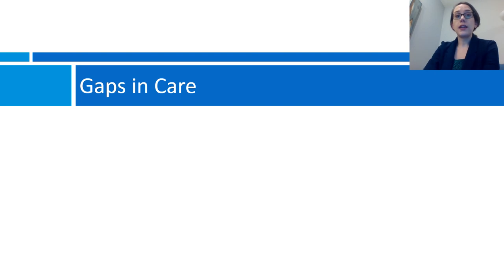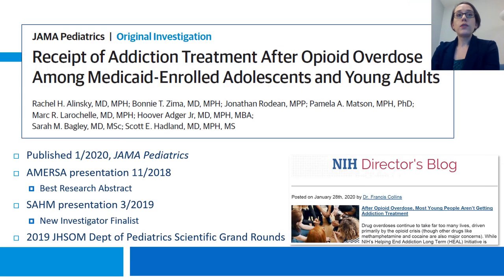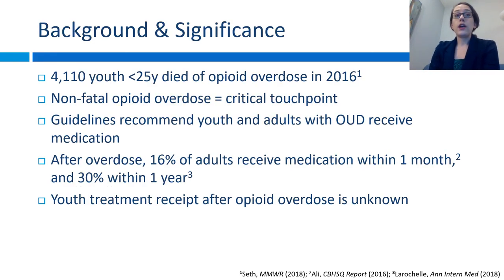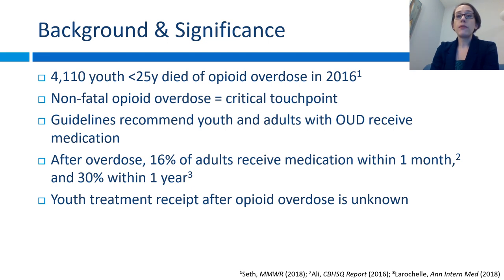Let me talk about gaps in care and some of the research I've done. I'll walk you through a study published in JAMA Pediatrics where I looked at the receipt of addiction treatment after opioid overdose among Medicaid-enrolled adolescents and young adults, which was also featured in the NIH director's blog. About 4,000 individuals under the age of 25 die of an opioid overdose every year, so nonfatal opioid overdoses seem like a critical touchpoint where youth not in treatment could be brought into treatment. Guidelines recommend that both youth and adults with opioid use disorder should receive medication, and research shows that after overdose about 16% of adults receive medications within a month and 30% within a year. However, youth treatment received after opioid overdose was previously unknown.